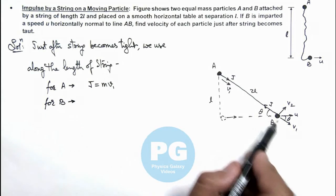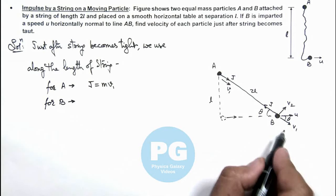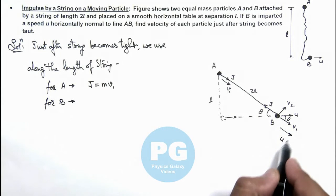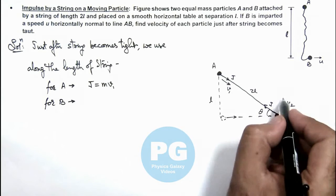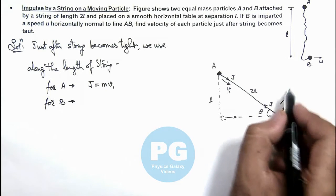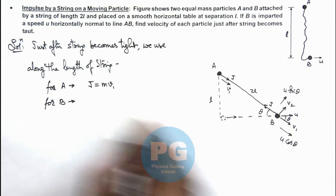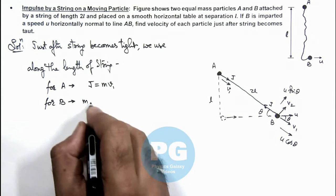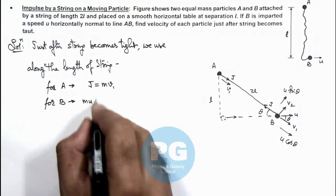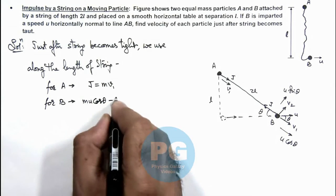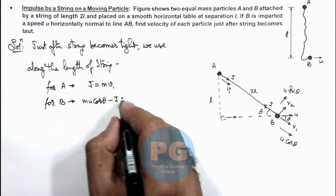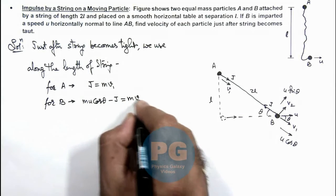Before string becomes tight it was moving in this direction with a velocity u cos theta, and in this direction we can consider its velocity was u sin theta. So here we can write its momentum impulse equation as mu cos theta minus J is equal to mv1.